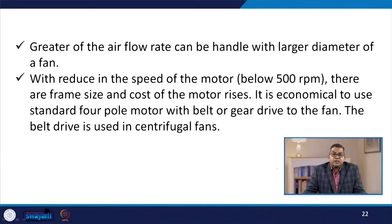A greater airflow rate can be handled with a larger diameter fan, but available space is also a restriction. With a reduction in motor speed below around 500 rpm, the frame size and cost of the motor rises. It is therefore economical to use a standard four-pole motor with a belt or gear drive to the fan; the belt drive is commonly used with centrifugal fans.